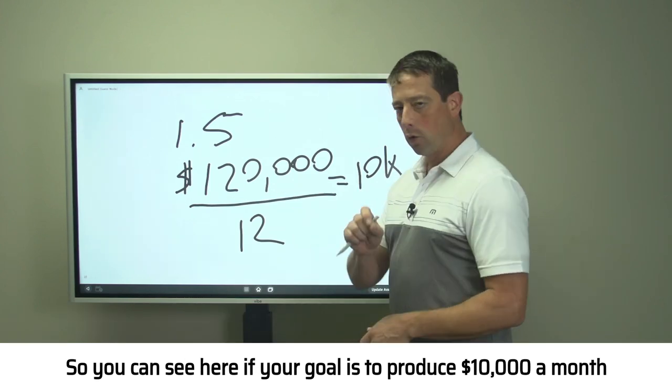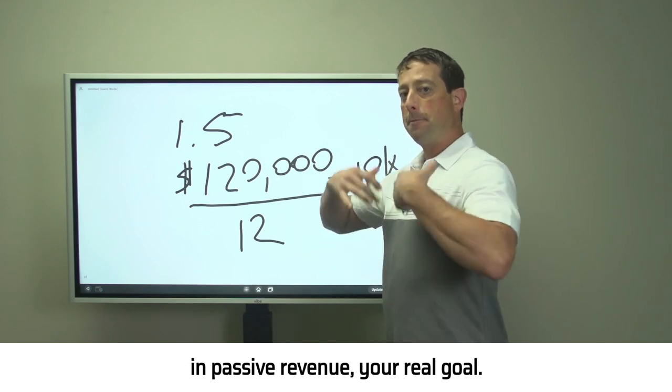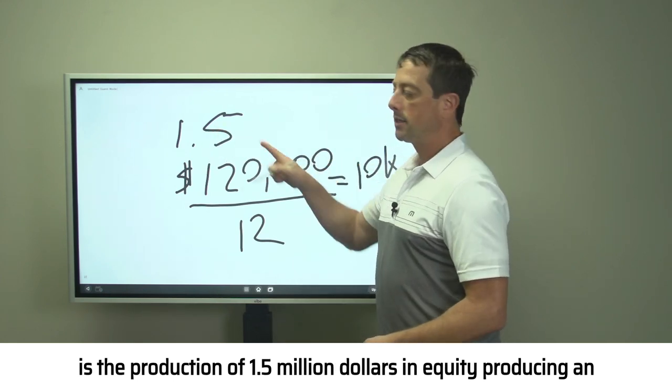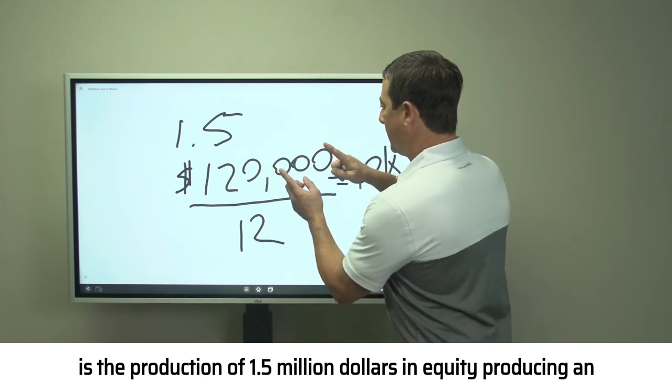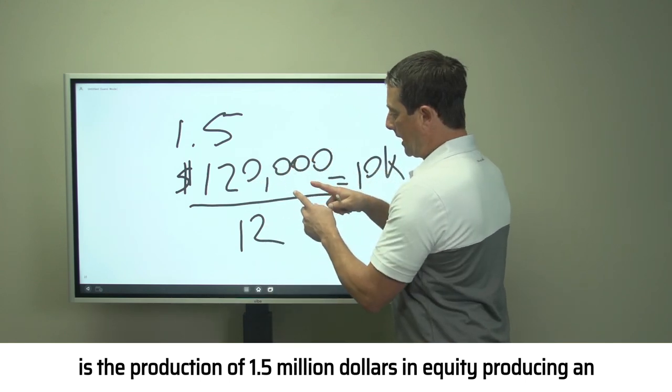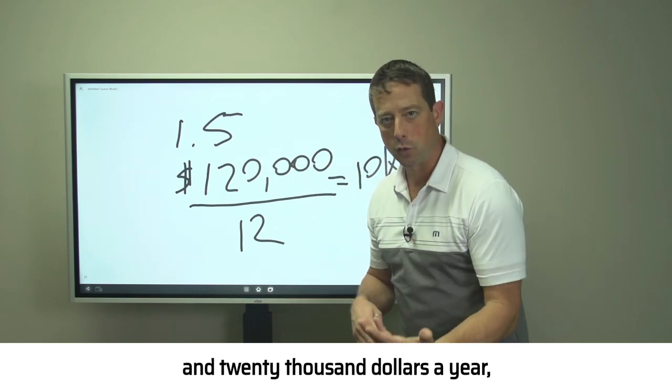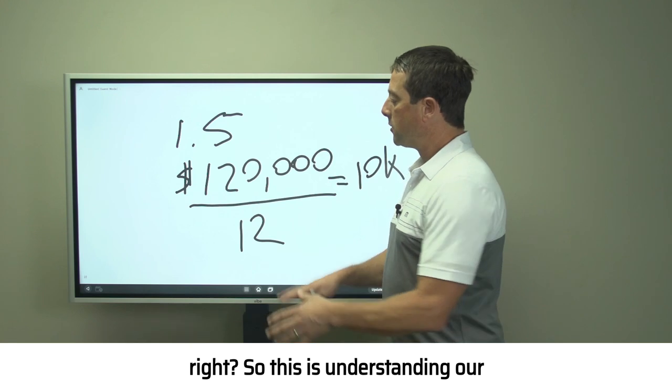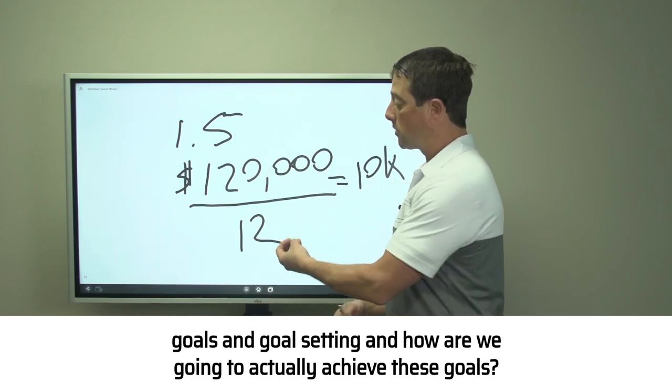You can see here if your goal is to produce $10,000 a month in passive revenue, your real goal is the production of 1.5 million dollars in equity producing an 8% cash on cash that will give you $120,000 a year. This is understanding our goals and goal setting and how we're going to actually achieve these goals.